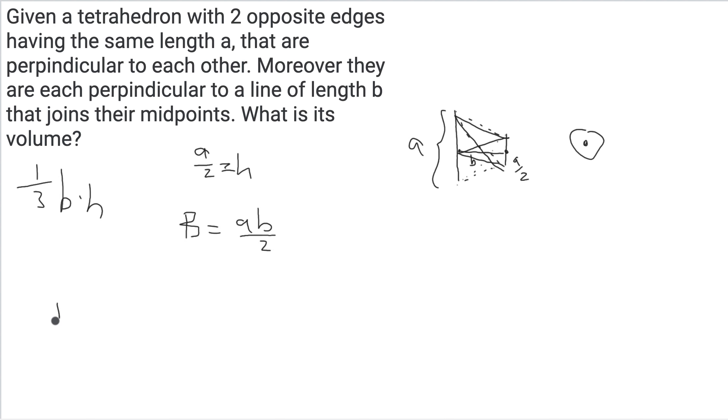Putting this all together, we get one-third times AB over 2 times A over 2. That's the volume of one of these, so we multiply by 2 to get the whole thing. We get our answer as one-sixth A squared B. And we are done.